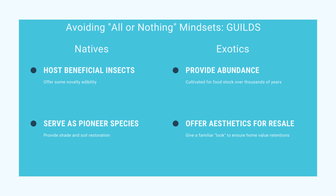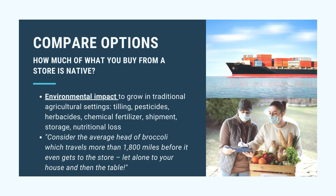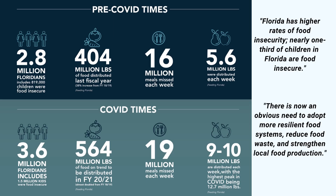What that means is you let your natives be the tier one of your food forest. By incorporating natives into the food forest you're going to decrease your environmental impact. When you stop buying food from the grocery store, you're not supporting a system that plows down native forests for roads or factories.